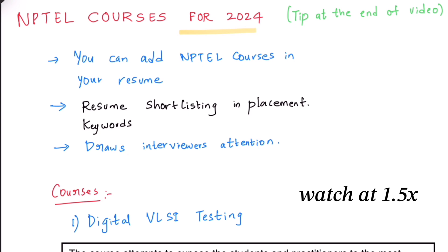First of all, why do you need to do NPTEL courses during placement? There is a round called resume shortlisting which some companies do. During resume shortlisting, they will search for certain keywords. So if you can include good courses and good keywords in your resume, it will increase your chances. If you include NPTEL courses, it will draw the interviewer's attention, and there is a possibility that he will ask questions from the domain you have already prepared for.